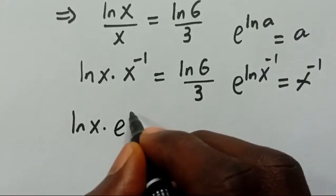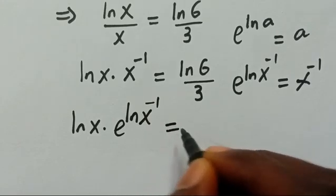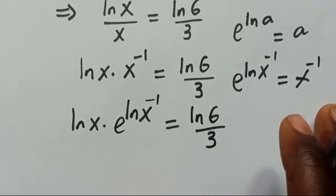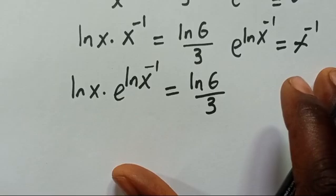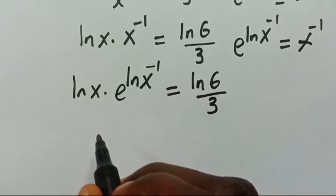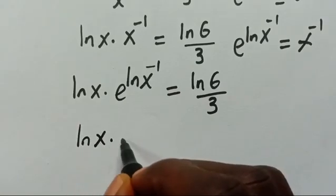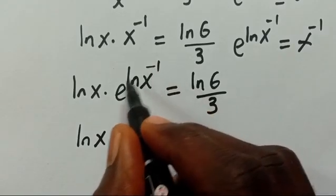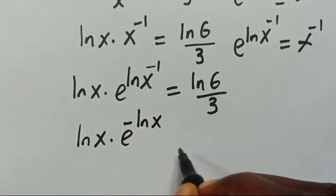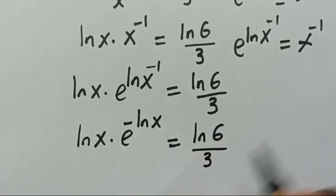We set up: e to the power of ln(x) to the power of minus 1 equals ln(6) divided by 3. Bringing the power down to the base, we have minus 1 times ln(x) multiplied by ln(x), which equals ln(6) divided by 3.